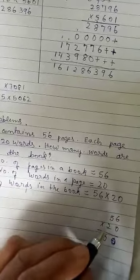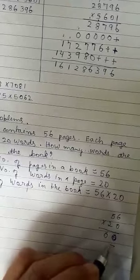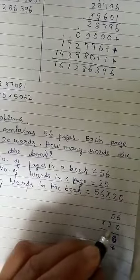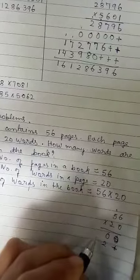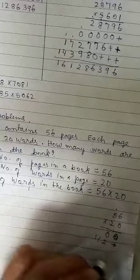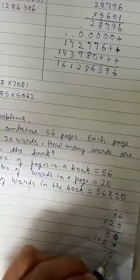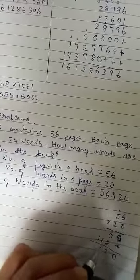Then now we do it with 2. Remember we do second time, so this place you can leave it. 2 into 6, 12. Put 2, carry over 1. 2, 5, 10. 11. Then you plus it. 0, 2, 1, 1.